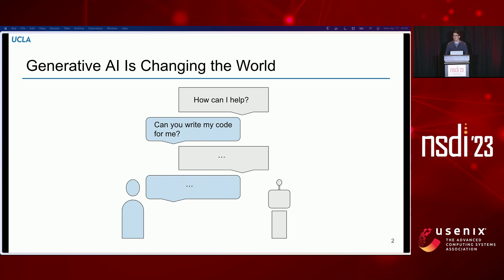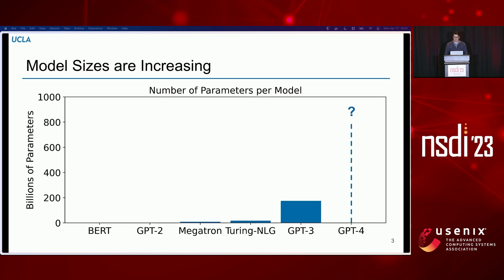One major trend powering a lot of these new emergent capabilities has been the increasing sizes of models. As the size of models has increased in their parameter count, new capabilities have emerged, as well as increases in the size of training data. We've now scaled to models that are hundreds of billions, and some are trillions of parameters, and they seem to only be getting larger.